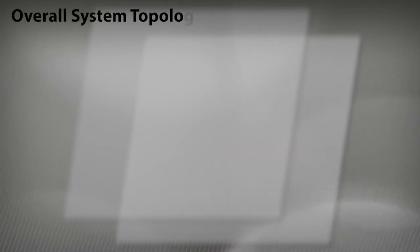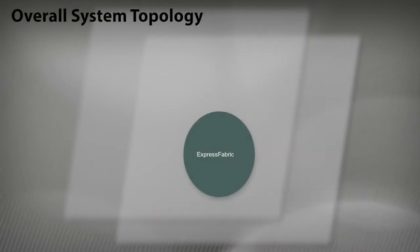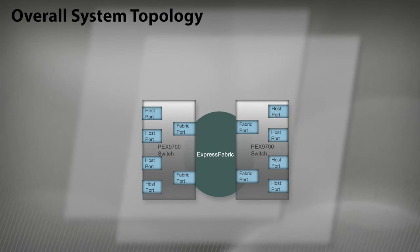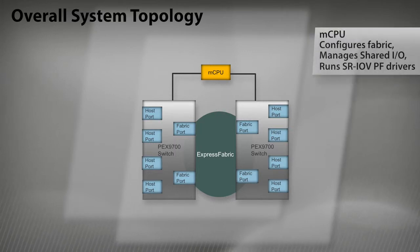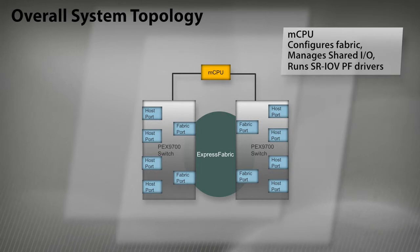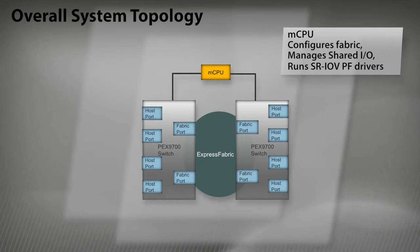This top-of-the-rack switch supports a non-blocking fabric with 32 hosts and shared IO devices. This is how an overall system would look with Express Fabric and Express IOV features implemented using PEX 9700 switches and MCPU software. The MCPU can be controlled through web-based management tools for true software-defined data center services.